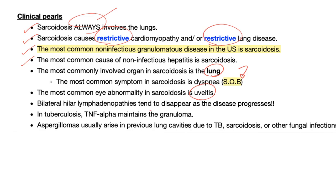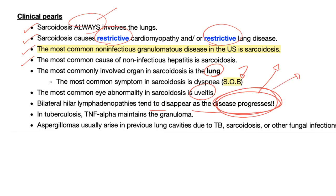The most common eye abnormality is uveitis. Bilateral hilar lymphadenopathies tend to disappear as the disease progresses. Here's an excellent exam question idea: they give you a typical sarcoidosis patient with severe disease involving all organs and ask what is expected as the disease progresses. The answer is disappearance of bilateral hilar lymphadenopathy — no student will answer this correctly.